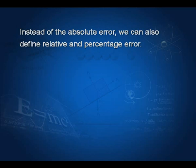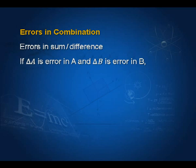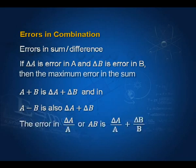Instead of absolute error, we can also define relative and percentage error. Relative error is ΔA_mean divided by A_mean, and percentage error is (ΔA_mean / A_mean) × 100%. Many times you have to think of errors in combination. Suppose you measure two quantities A and B, where ΔA is the error in A and ΔB is the error in B. Then the maximum error in the sum A + B is ΔA + ΔB, and even for the difference A − B, the error is still ΔA + ΔB — that is why it is called maximum error.